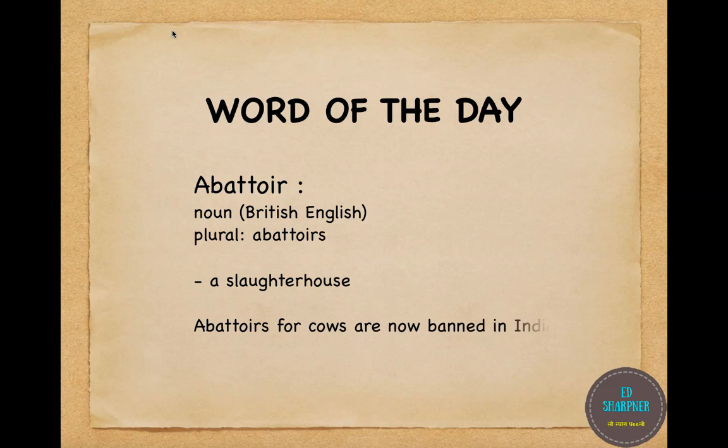Today's word is abattoir. It's a French origin word, which is why it is mostly used only in British English. Its plural is abattoirs. It means a slaughterhouse — a place where animals are butchered, especially for meat. We will be updating similar new words with each upcoming video.